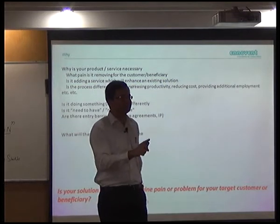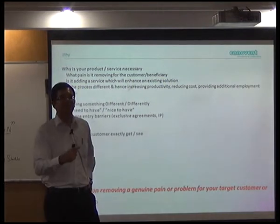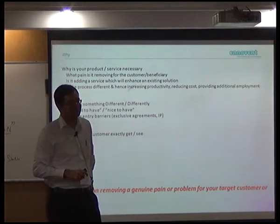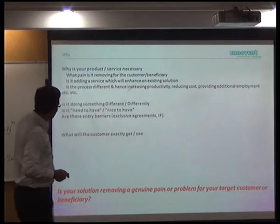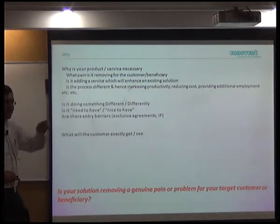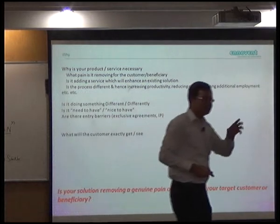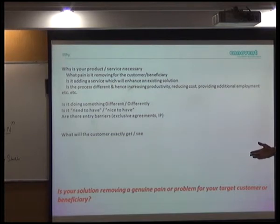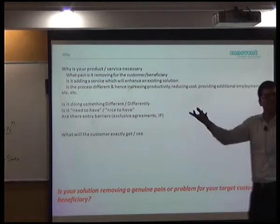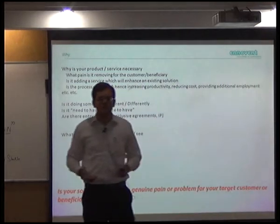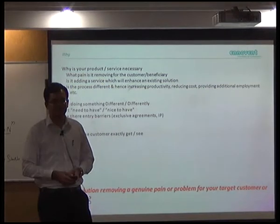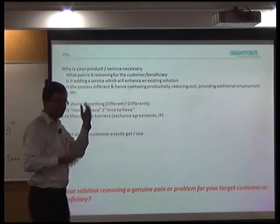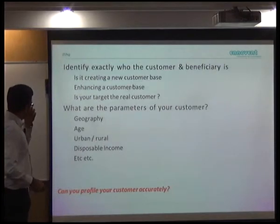Going back to my 10marks example: online math help in 2008, when the recession hit school education in the US, there was a genuine problem — parents were worried, students were worried about the future. A home tutor costs 70 to 80 dollars per hour there. The pain was there, the market was there, and ours was 10 dollars a month — that's why we were able to get success. In India it failed because it was a nice-to-have. In the US it was a need-to-have. That's why we shifted the market.